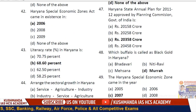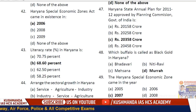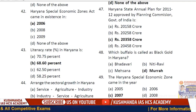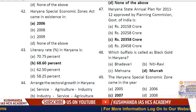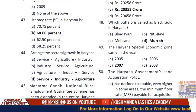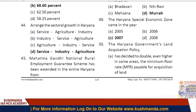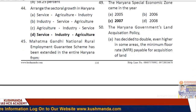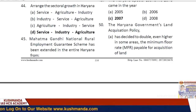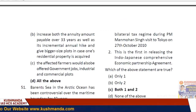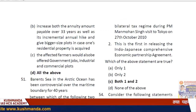Question 47: Haryana state annual plan for 2011–12, approved by the Planning Commission of India, was for 20,358 crore rupees. Question 48: Which buffalo is called 'black gold' in Haryana? The answer is Murrah. Question 49: Haryana's Special Economic Zone came into being in the year 2007.